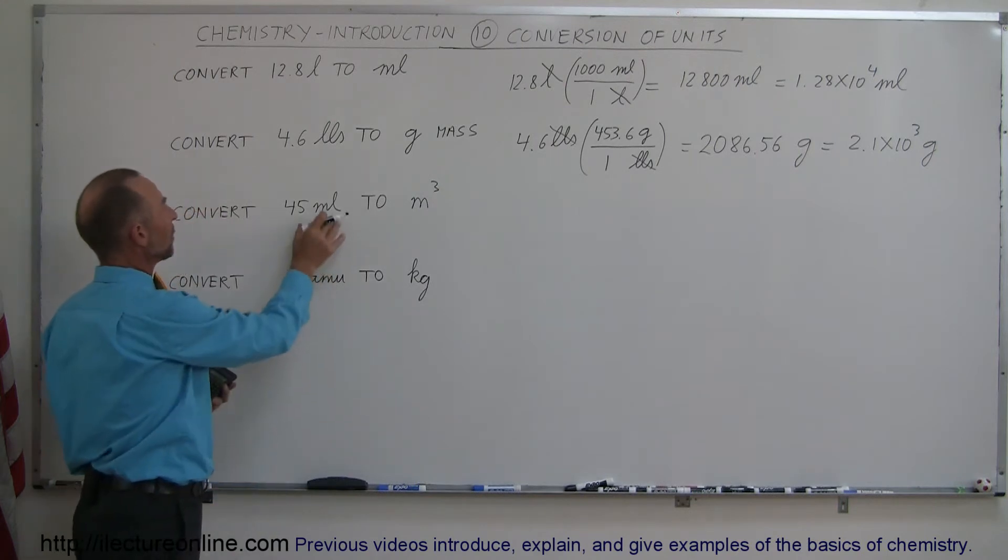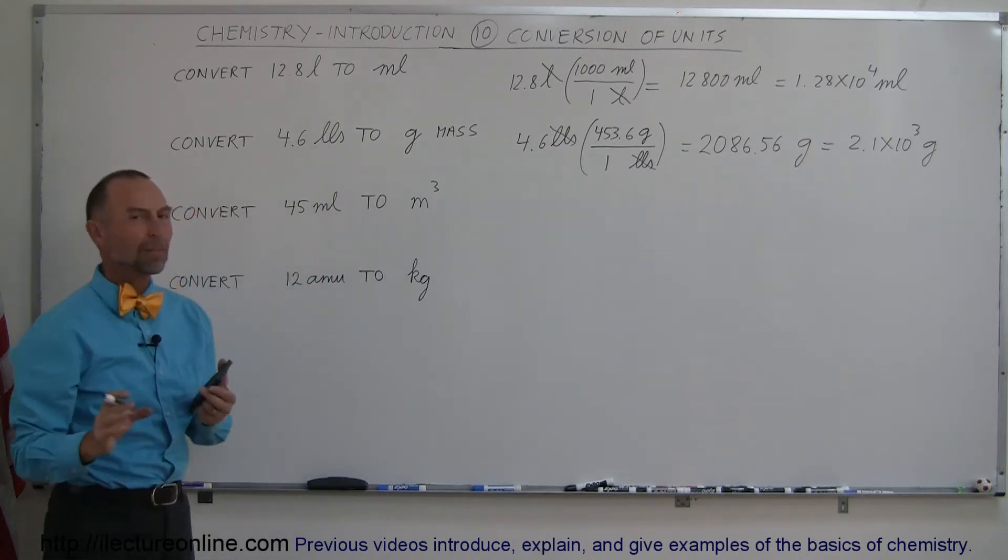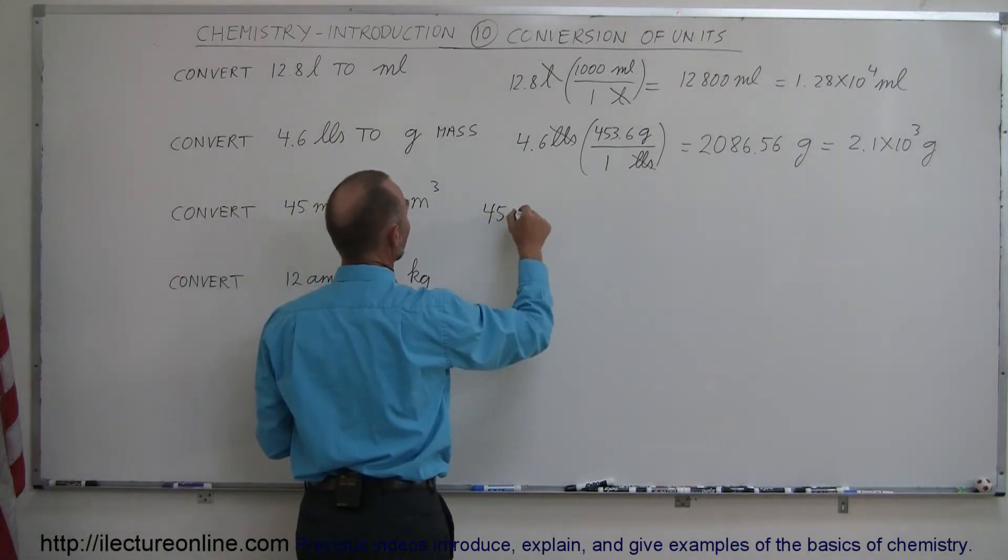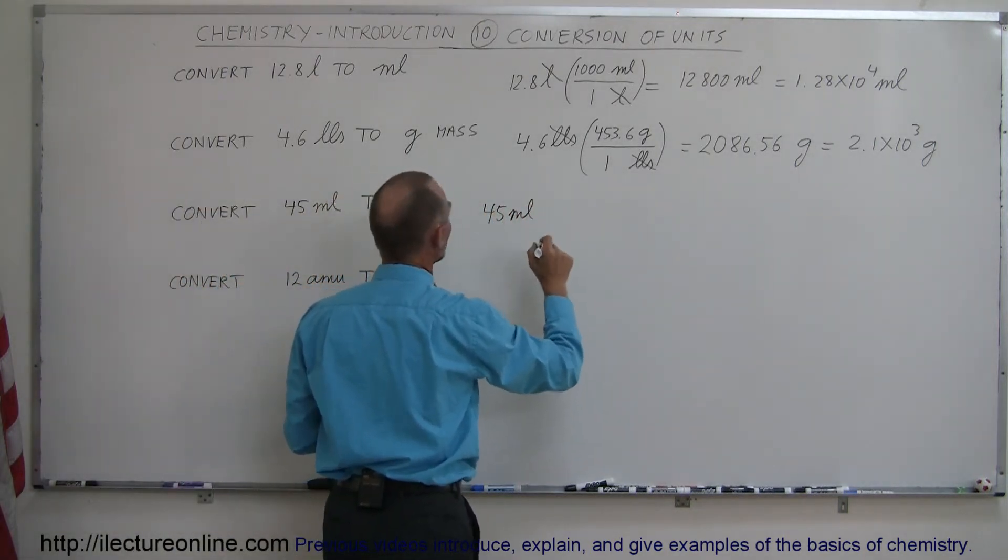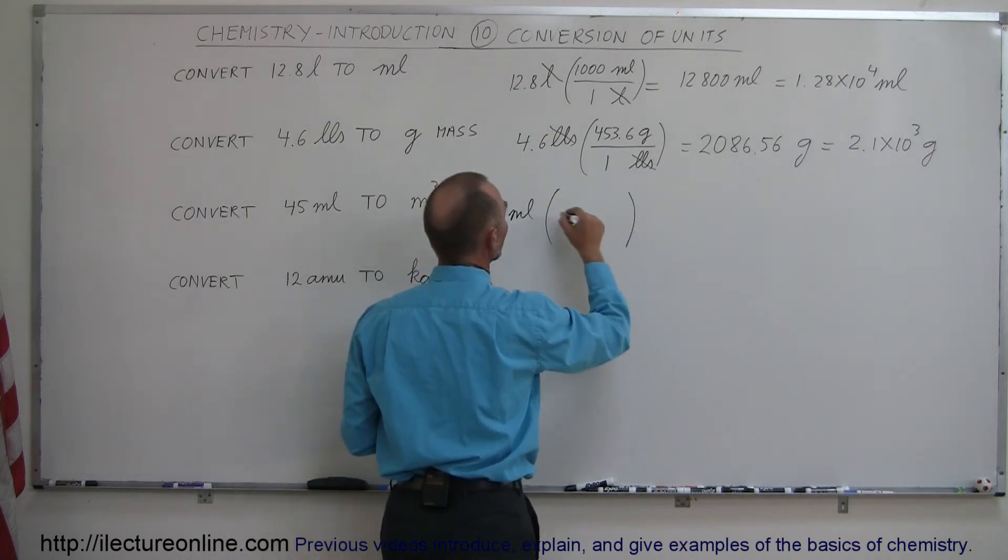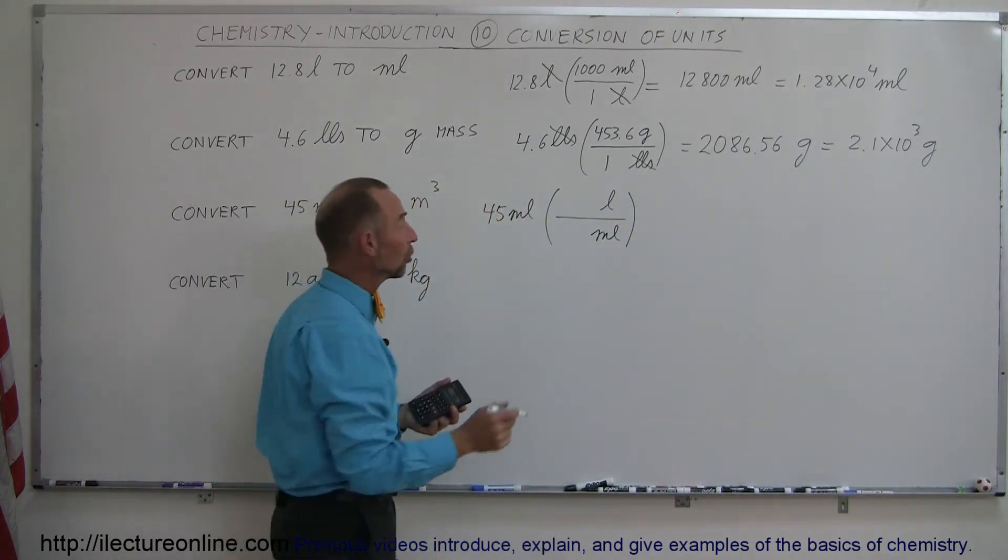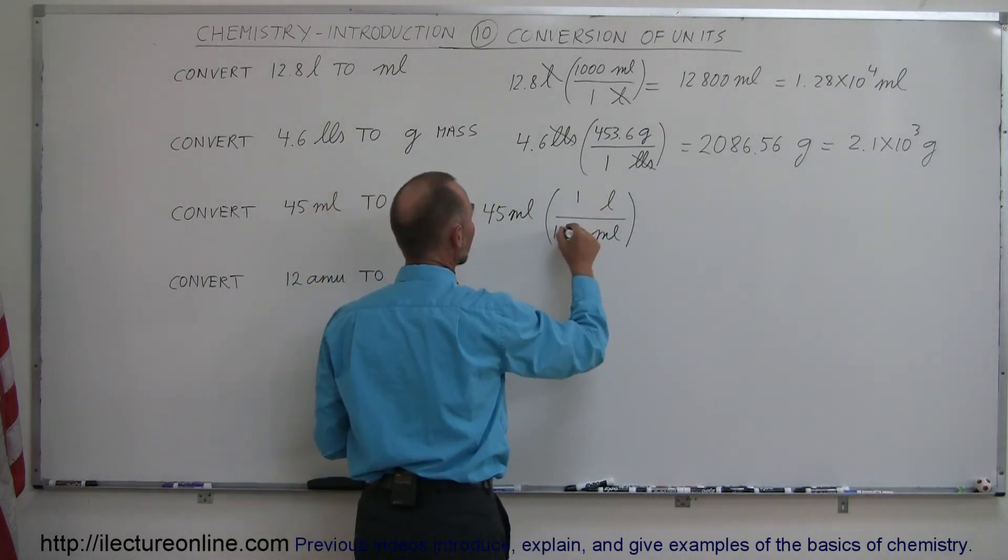Now let's go from milliliters to cubic meters. Here we may want to go through two steps. Start out with 45 milliliters. The first thing we're going to do is convert from milliliters to liters. So we want liters at the top, milliliters at the bottom, so milliliters will cancel out. The ratio is one liter is a thousand milliliters.